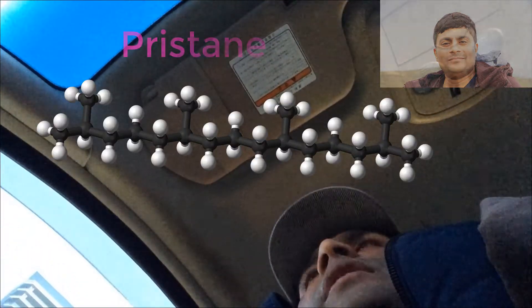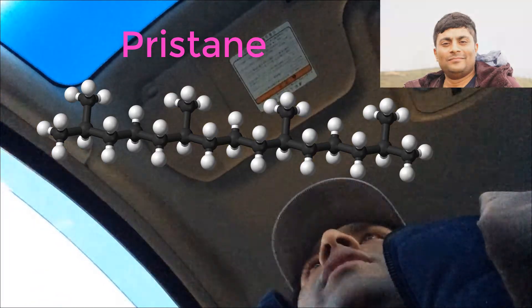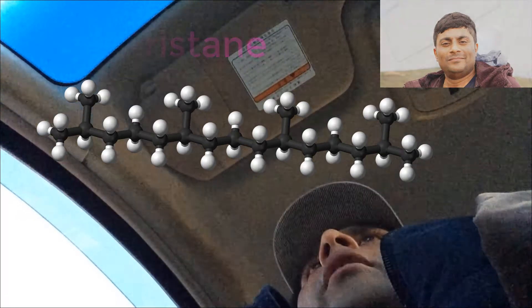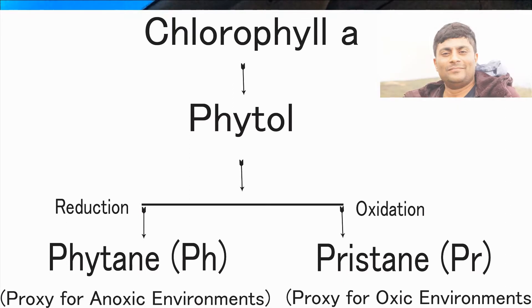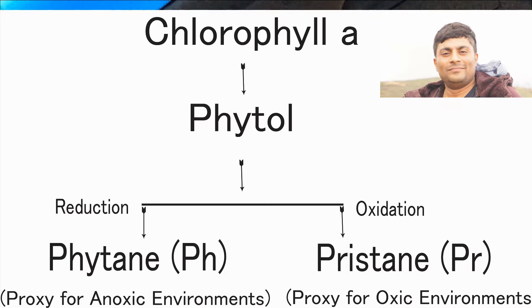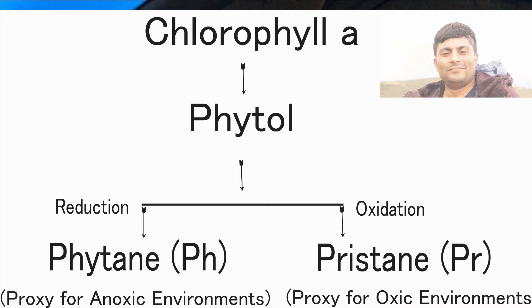Examples include pristane and phytane. Pristane is derived from phytol, and phytol comes from chlorophyll — the green pigment of plants. Chlorophyll-a produces phytol, and under decomposition, phytol can yield pristane or phytane. When phytol undergoes oxidation or decarboxylation, pristane is produced. On the other hand, under environmental conditions like dehydration, phytol turns into phytane.